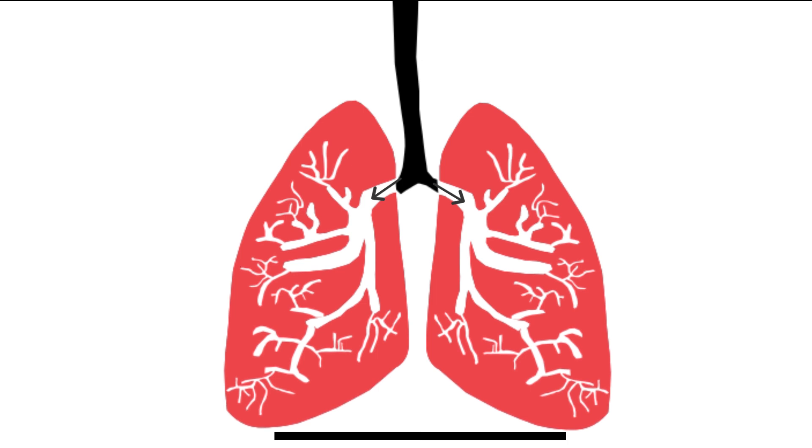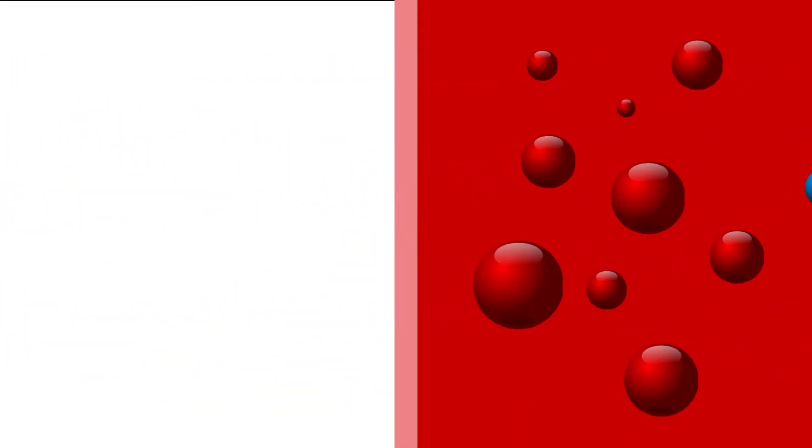At the end of each bronchiole, there is an air sac called alveoli, which is surrounded by a mesh of tiny blood vessels called capillaries, from which the breathed oxygen is passed into your blood, then to the heart, which sends it out to all the cells in the body.